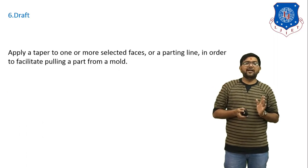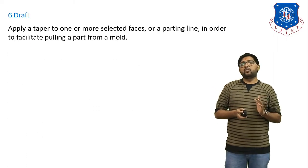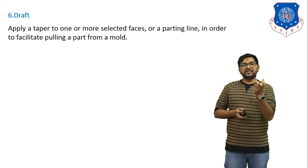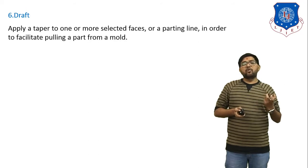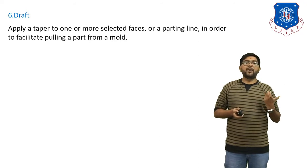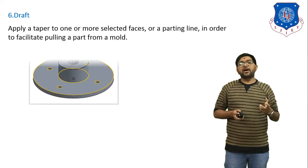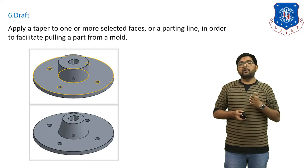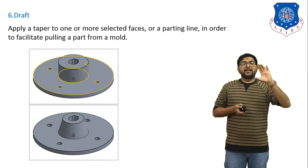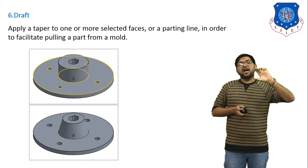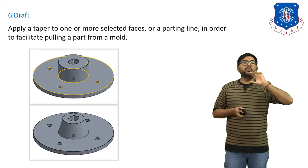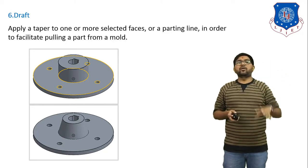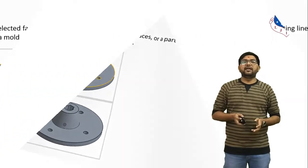Next is draft. Draft means we apply a taper shape to a cylinder or any body — we apply a taper to one or more selected faces or a parting line in order to facilitate pulling a part from a mold. From the two figures you can see that in the first figure there is a plain cylinder, and after applying draft in the second figure that cylinder is converted into a tapered form.